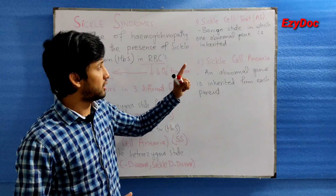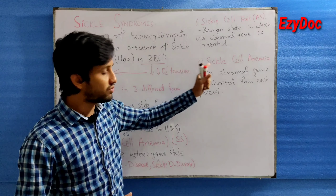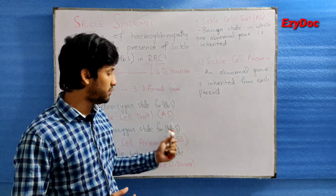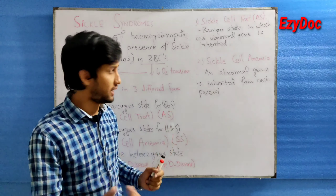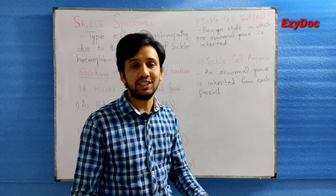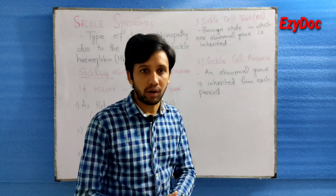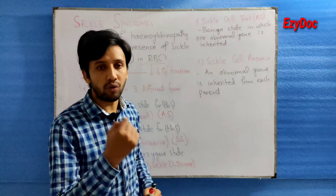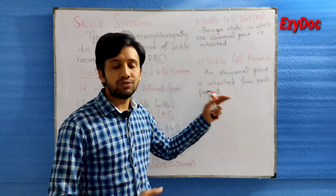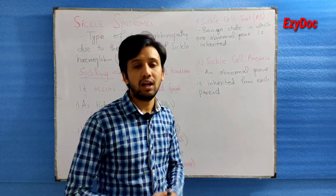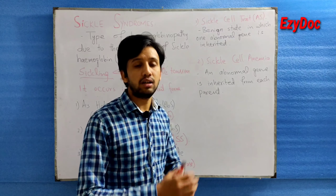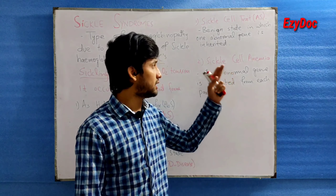The second form, sickle cell anemia (HBSS), is the most severe form. In sickle cell anemia both genes are abnormal, whereas in sickle cell trait only one gene is abnormal. Being the most severe form, sickle cell anemia can decrease life expectancy.